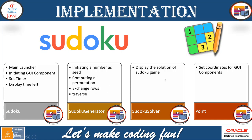The Sudoku Solver will display the solution of the Sudoku game. When the user is giving up or quitting the game and wants to know the solution of the puzzle, that can be done with the help of this class. The Point class sets the coordinates for graphical user interface components and all the missing numbers.